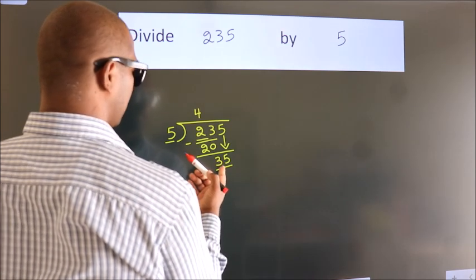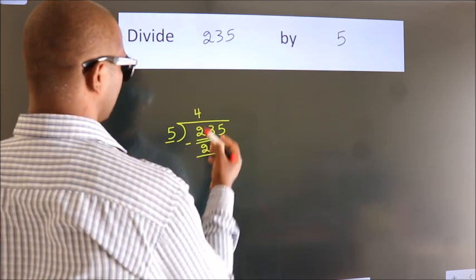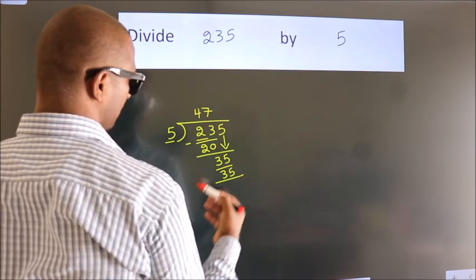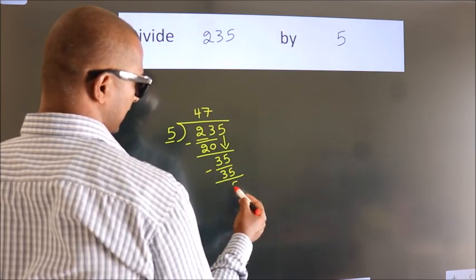When do we get 35 in the 5 table? 5 times 7 is 35. Now we subtract. We get 0.